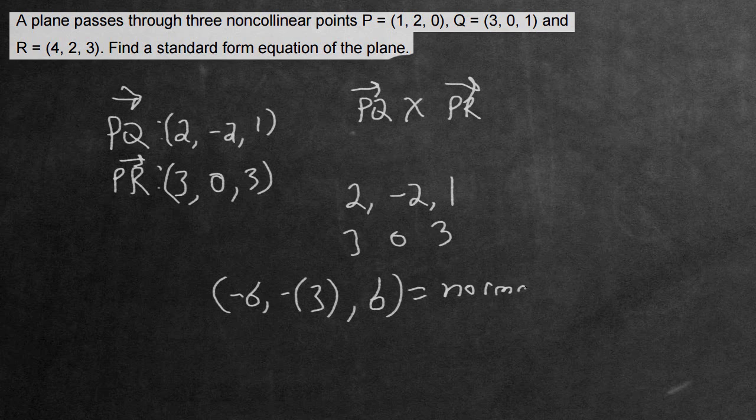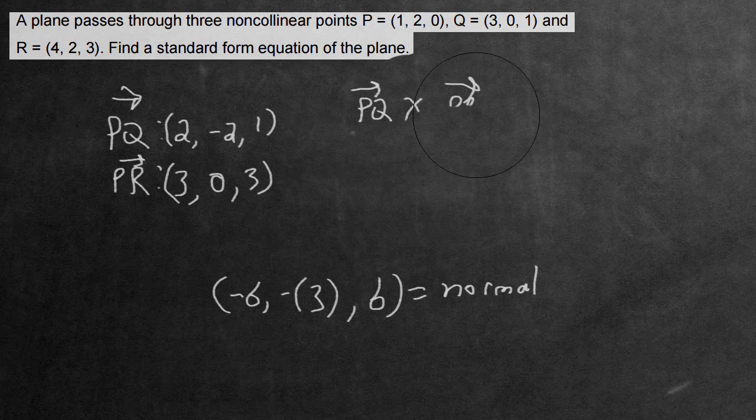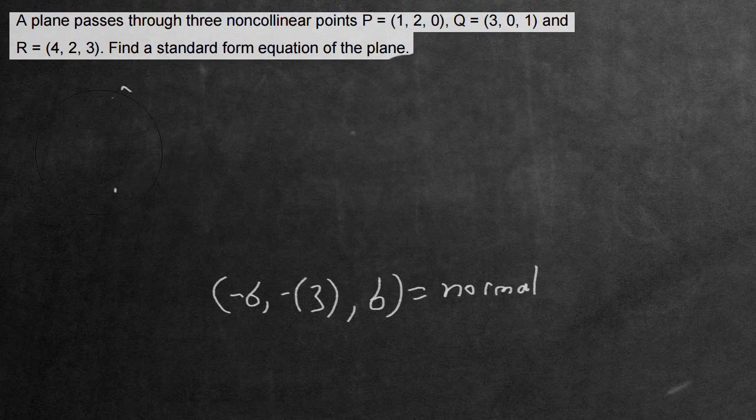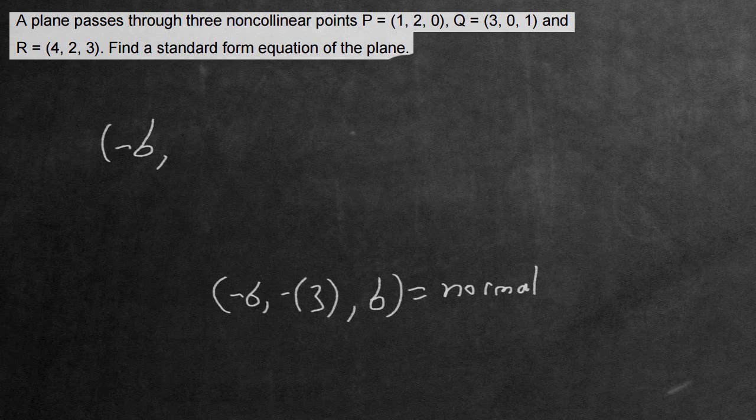Normal meaning it's orthogonal or at a right angle to the plane. Now that we've found the normal, we can erase all of this because we won't be needing it anymore. What we want to do is choose any of the points with this normal. First you write out the normal in the equation of a plane: negative 6, negative 3, and 6.